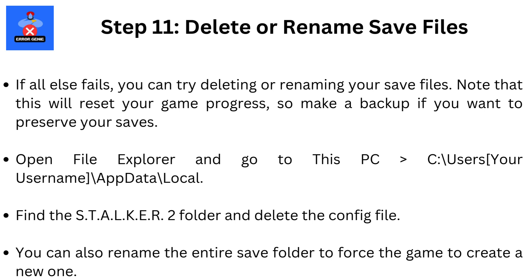Step 11: Delete or rename save files. If all else fails, you can try deleting or renaming your save files. Note that this will reset your game progress, so make a backup if you want to preserve your saves. Open File Explorer and navigate to C:\Users\[YourUsername]\AppData\Local. Find the STALKER 2 folder and delete the config file. You can also rename the entire save folder to force the game to create a new one.